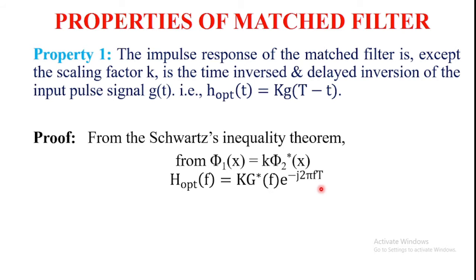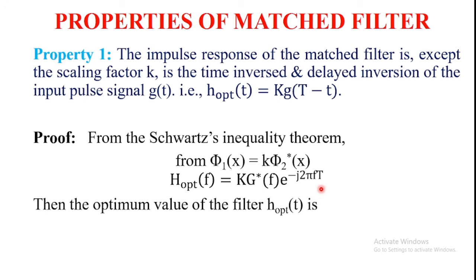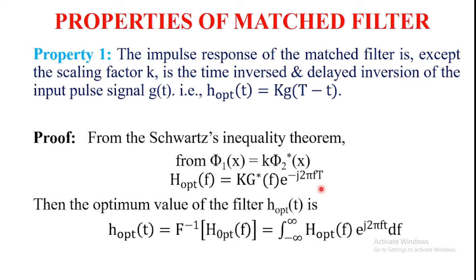Now let's calculate the optimum value of the filter in the time domain, that is h_optimum(t). Using the definition of the inverse Fourier transform, h_optimum(t) equals the inverse Fourier transform of H_optimum(f), which is equal to the integral from minus infinity to infinity of H_optimum(f) · e^(j2πft) df. This is the definition of the inverse Fourier transform.